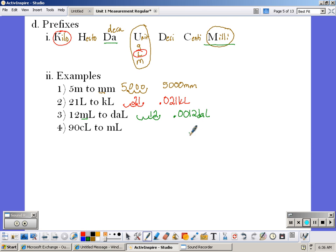In number four, we're starting at centiliters and going to milliliters. So we're going from C to the M, so that's just one place to the right. So we would take our 90, move the decimal one place, and get 900 milliliters.